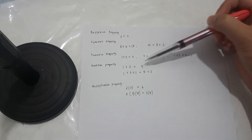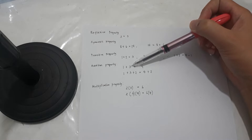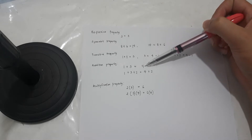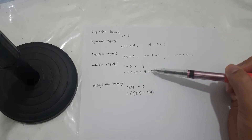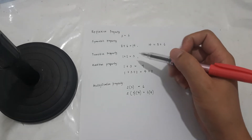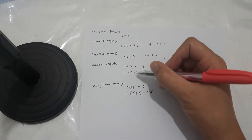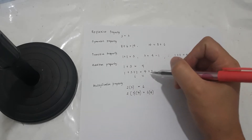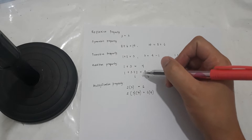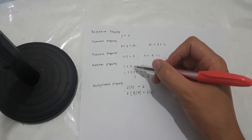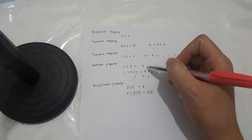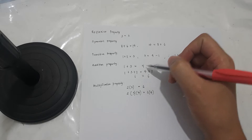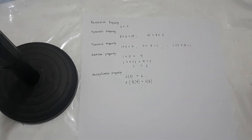Next is the addition property. 1 plus 3 is equal to 4. So if you add 2 here and add 2 on the other side, the result would be 1 plus 3 plus 2 is equal to 4 plus 2. The answer would still be equal — 6 is equal to 6. You could add as long as what you add on one side is the same as what you add on the other side of the equation.